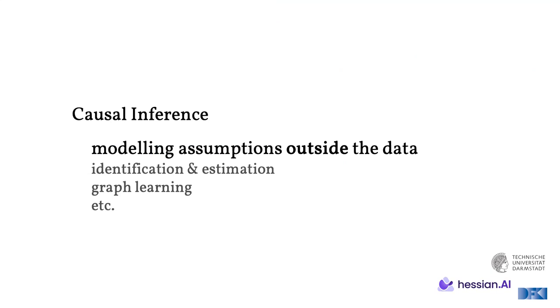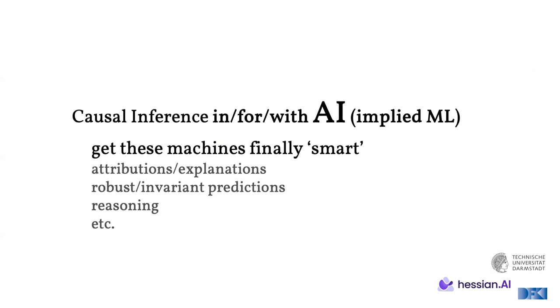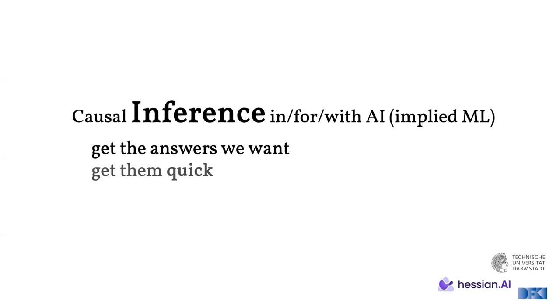Let's jump right into it. Causal inference is concerned with modeling assumptions outside the data. It's a language formalizing many ideas and they lead to interesting subtopics such as identification and estimation of causal effects, graph learning, learning of causal relations in the first place, and much more. Causal inference in, for, or with AI, and by that implied machine learning, is about a different thing. It's about getting these machines finally to be smart. So things like attributions, explanations, having robust and invariant predictors, reasoning chains, etc. Causal inference though is concerned with getting answers, getting the answers we want, and getting them efficiently.